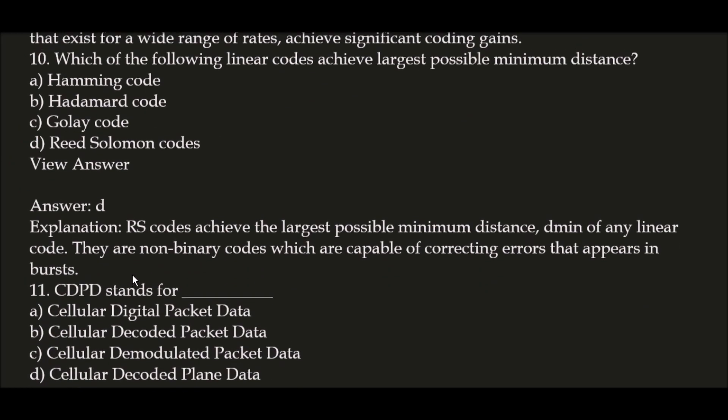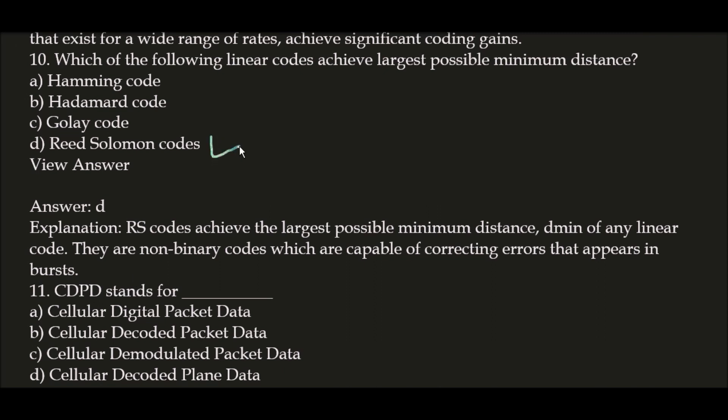Next question: which of the following linear codes achieve the largest possible minimum distance? The correct answer is also option D — Reed-Solomon codes. RS codes achieve the largest possible minimum distance, denoted by D_min, of any linear code. They are non-binary codes capable of correcting errors that appear in words.